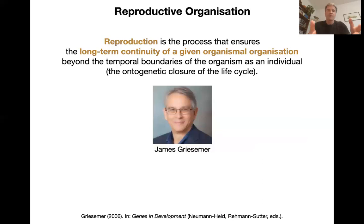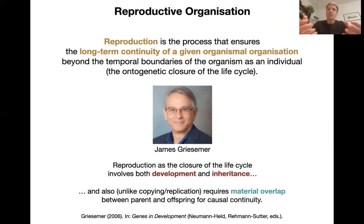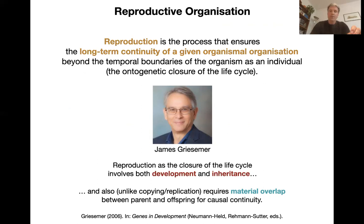Linking this back to the reproducer account, we can state that reproduction — seen as the closure of the life cycle — involves both development and inheritance. You have organizational continuity throughout the life cycle of the individual, given by the processes of development, and then from generation to generation, that's given by the process of inheritance. The other very important point Grisimar was making is that it not only requires the transfer of information, but also material overlap between parent and offspring for causal continuity — because otherwise you couldn't have this organizational continuity. The organization of the organism has to be physically and causally propagated through the generations.